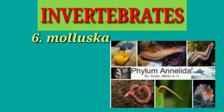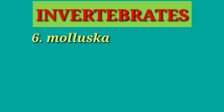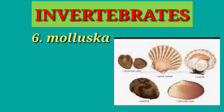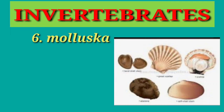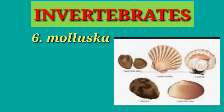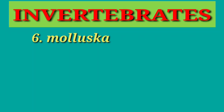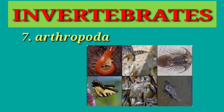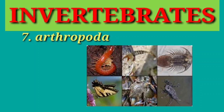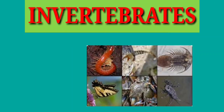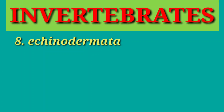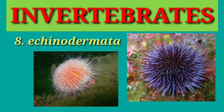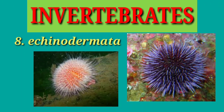Number six is the mollusca. Molluscs usually have a shell, either inside or outside their soft bodies. They also have jointed legs, which they use for walking and swimming. Number seven is the arthropoda. Arthropods are animals having a segmented body and jointed legs.